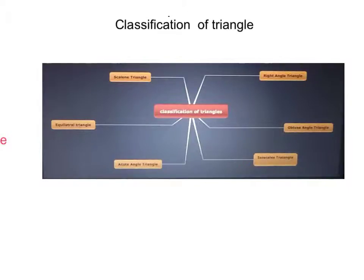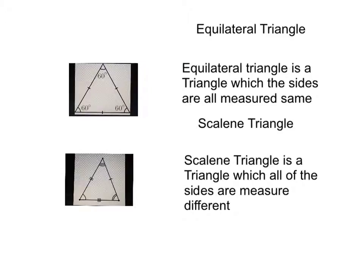Equilateral triangle: equilateral triangle is a triangle with the sides are all measured in 60 degrees, 60 degrees, 60 degrees.